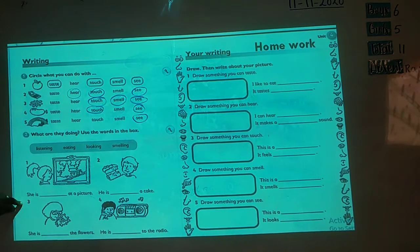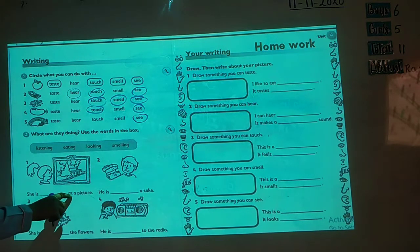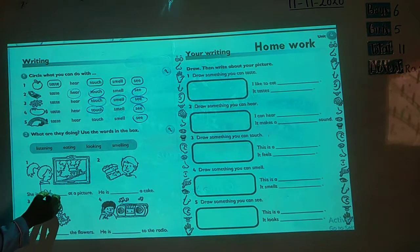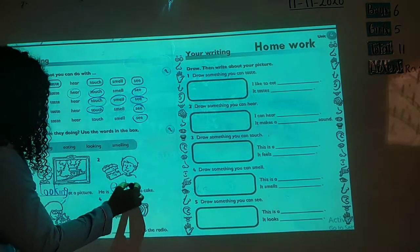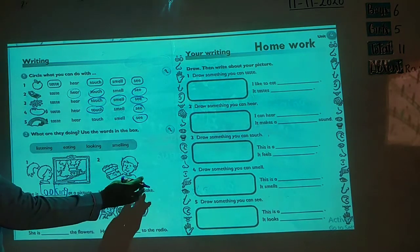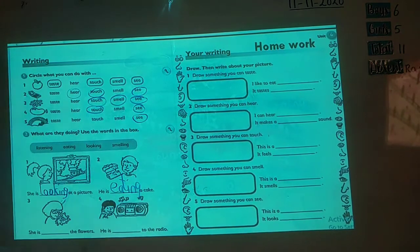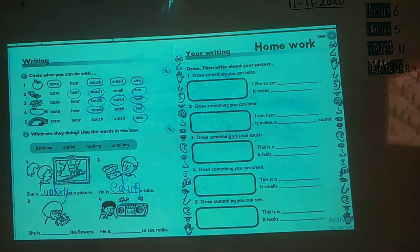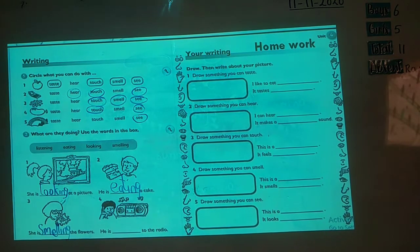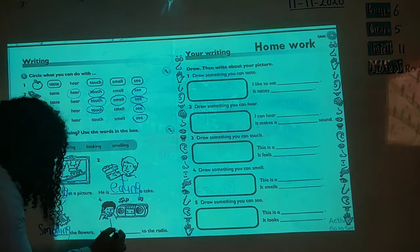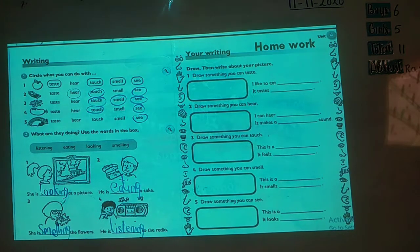That is all it tells us here. Then here, listening, eating, looking, smelling. Look at this picture. She is looking at a picture. She is looking at a picture. He is eating. He is eating a cake. What's the 'ing'? He is eating a cake. Now, three. She is smelling. She is smelling the flower. And the last one, he is listening. He is listening to the radio. So, this is all it is.